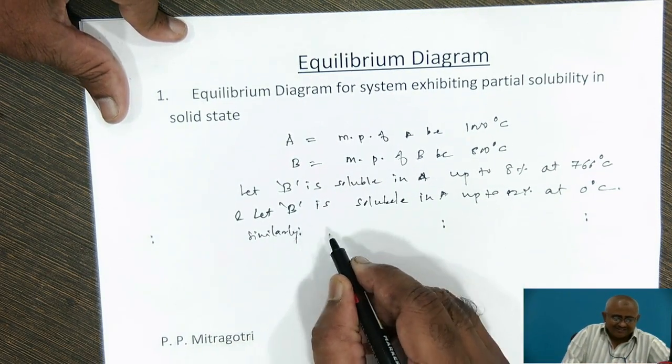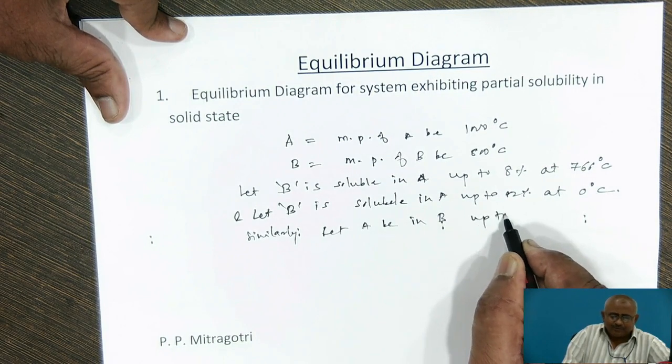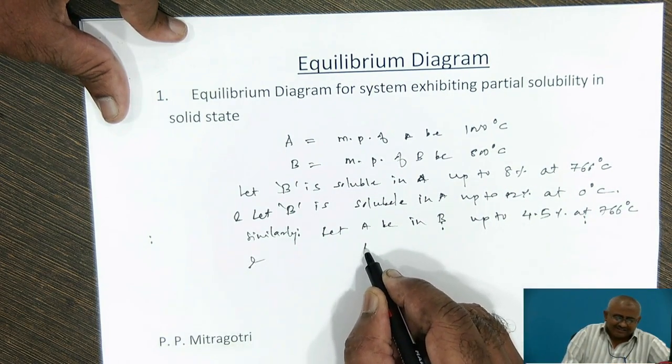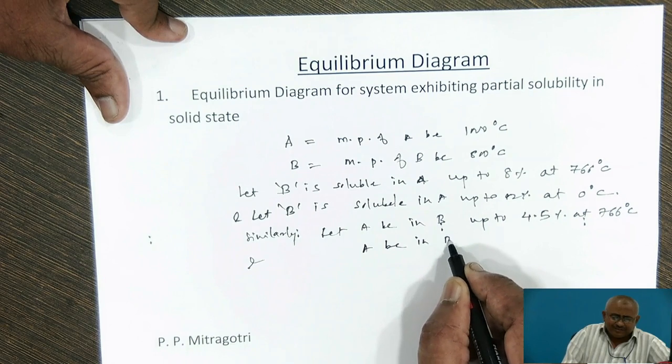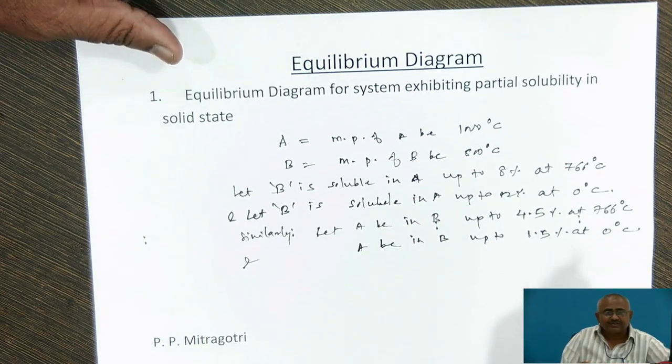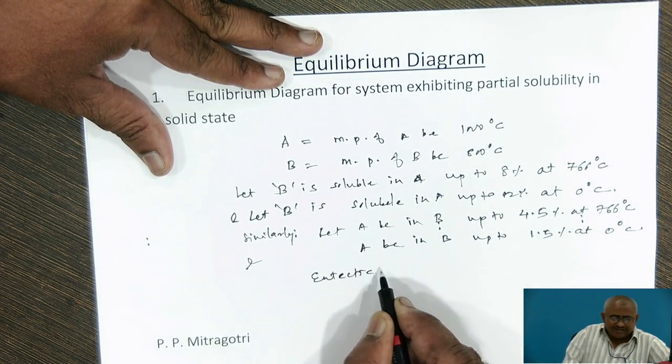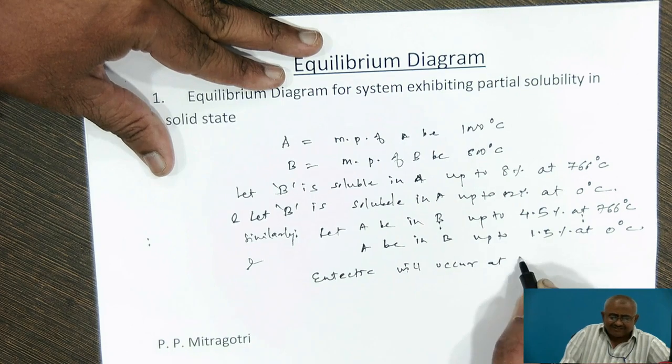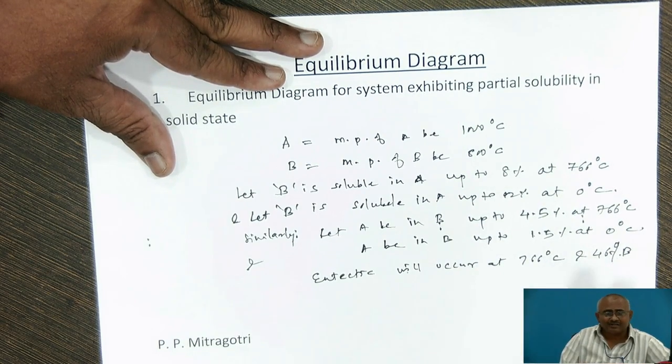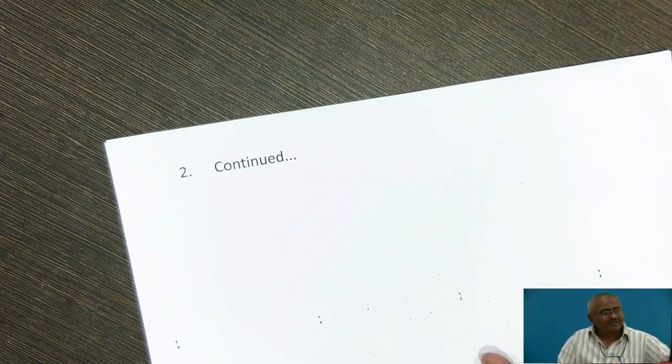Similarly, let A be soluble in B up to 1.5% at 766 degrees Celsius and up to 1.5% at 0 degrees Celsius. In such system, there will be eutectic point at 766 degrees Celsius and at 46% of B. With this data, we will construct the equilibrium diagram exhibiting partial solid solubility.